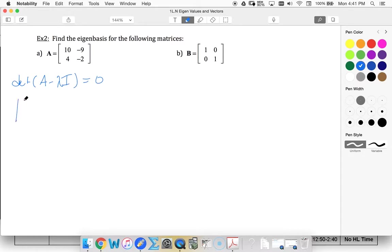So I'm going to end up with 10 minus lambda, negative 9, 4, negative 2 minus lambda. I want to set that equal to 0.